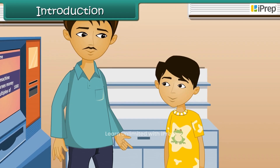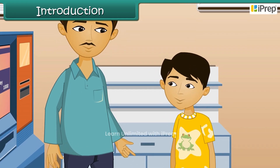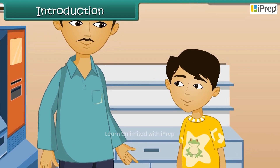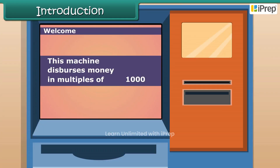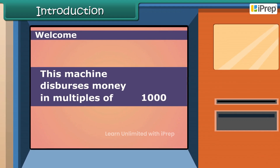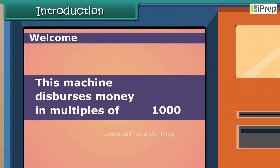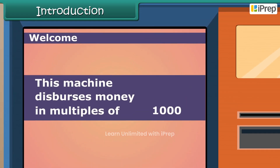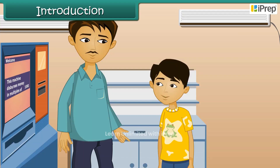You are at an ATM center with your father. You see a message on the screen that says 'This machine disburses money in multiples of 1000.' You ask your father what the message means.